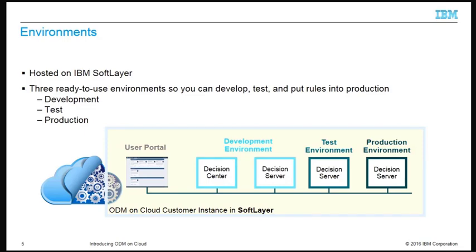There are three ready-to-use environments that support a staged progression from development to test to production. Users access the applicable environments based on their assigned roles. The development environment is the main environment for collaborating on the development and lifecycle of a decision service. It includes the Decision Center and Decision Server components. The Decision Center contains both the business console and the enterprise console for collaboration and project governance.